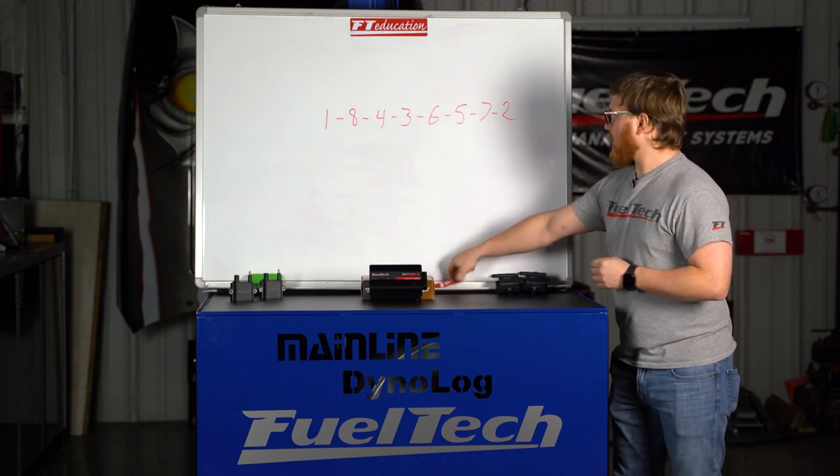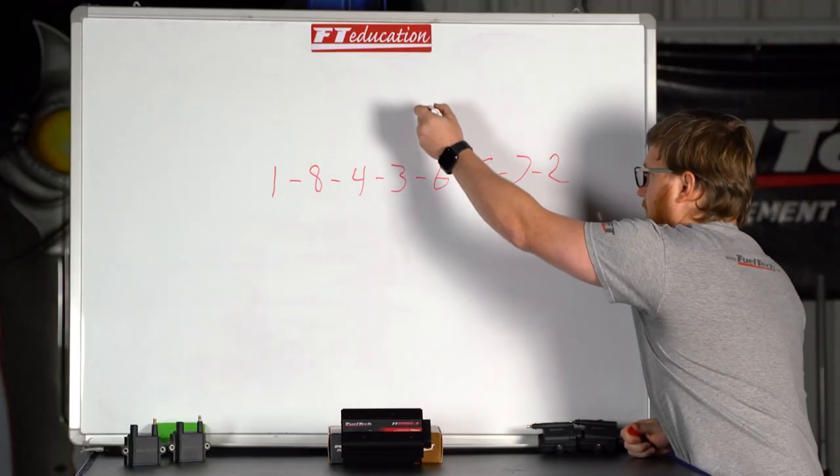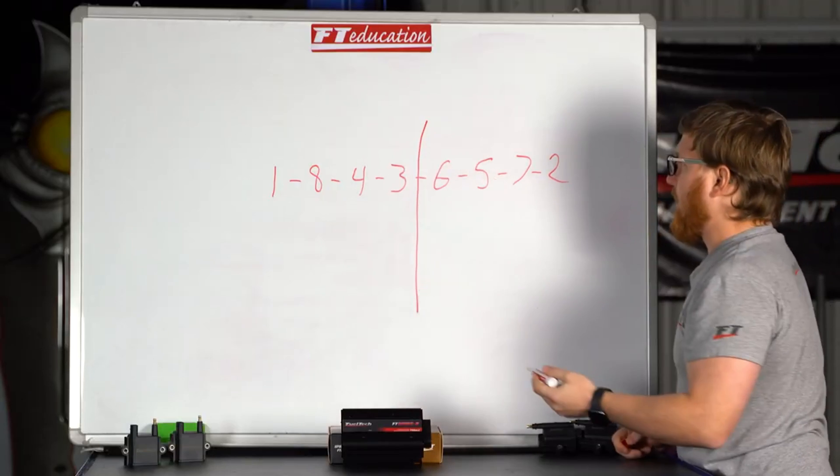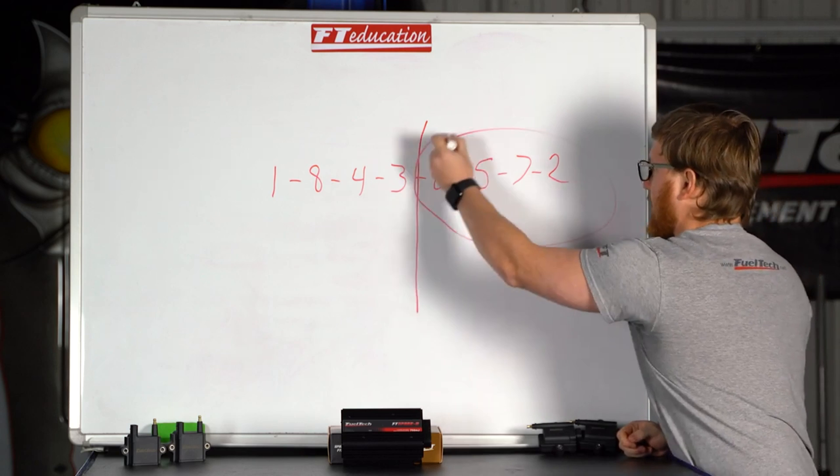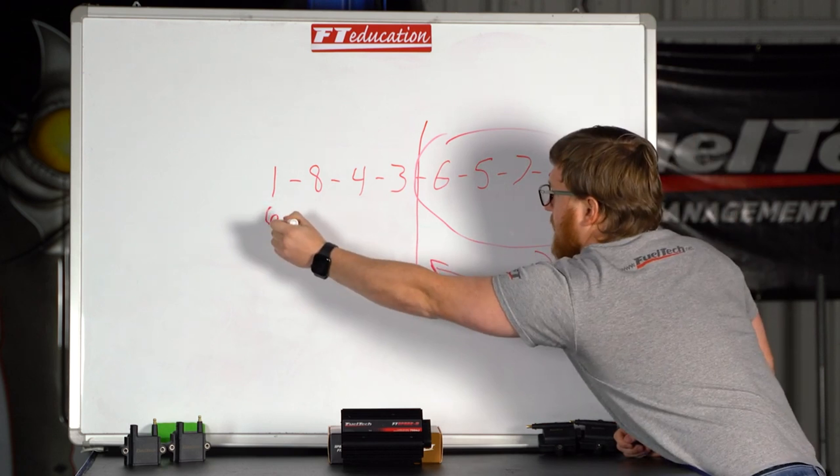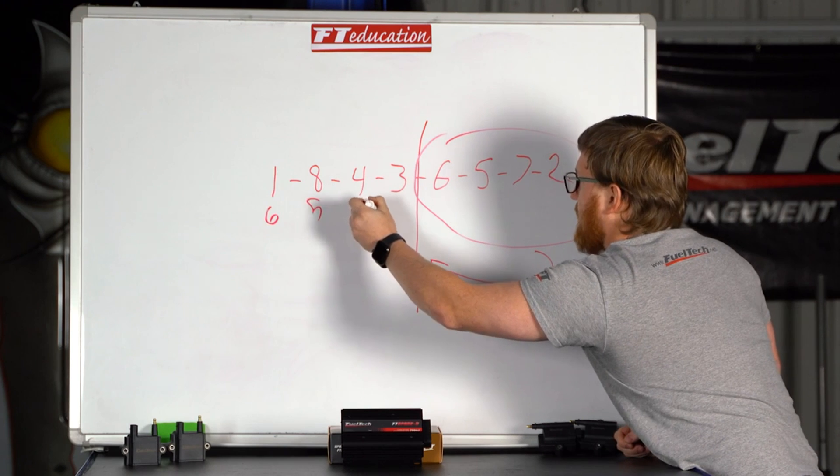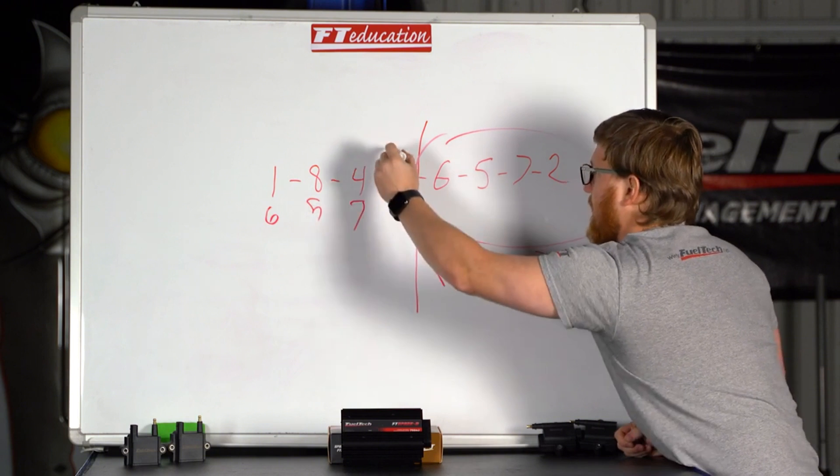And how that works is if you take this firing order that we have here and you draw a line down the center of it and take this section and move it over to here, you would have one and six, eight and five, four and seven, three and two. These are your pairs.